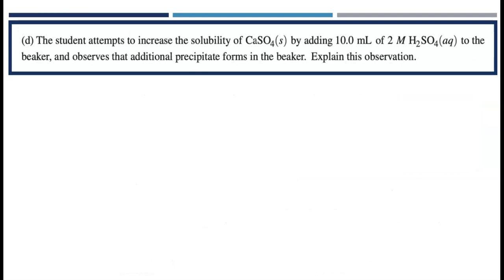There is one final part to this question. The student attempts to increase the solubility of the calcium sulfate solid by adding 10.0 milliliters of two molar sulfuric acid to the beaker and observes that additional precipitate forms in the beaker. Explain this observation. Let's think about this from a chemical reaction.